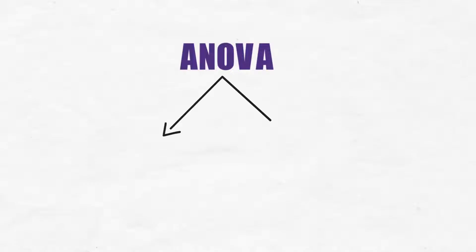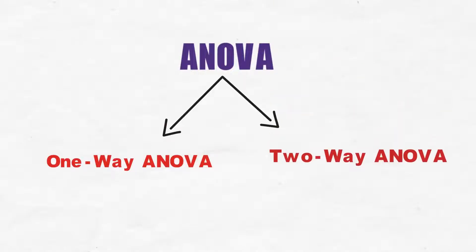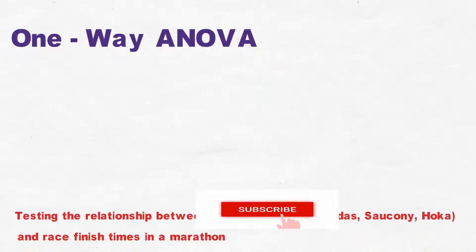There is a two-fold purpose of ANOVA. In one-way ANOVA, the researcher takes only one factor, whereas in the case of two-way ANOVA, the researcher investigates two factors concurrently. What is one-way ANOVA? One-way analysis of variance (ANOVA)